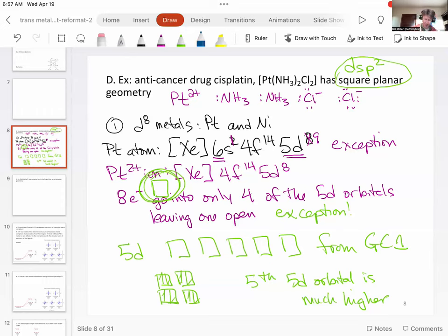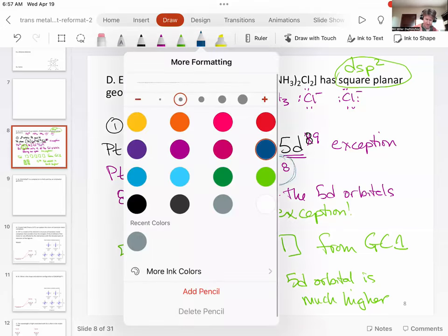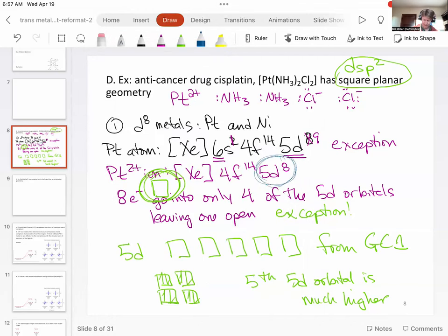Now I've got a little more color. There's one of the d orbitals here. One of the d orbitals here. One of the d orbitals here, and then the next orbital is going to be 6s, and then the next orbital is actually going to be 6p, and there are three of them. That's where this hybridization comes from.